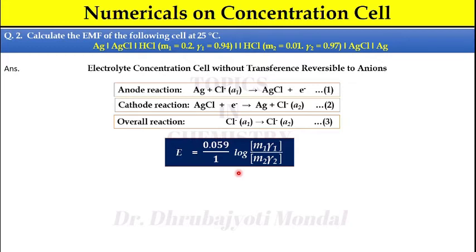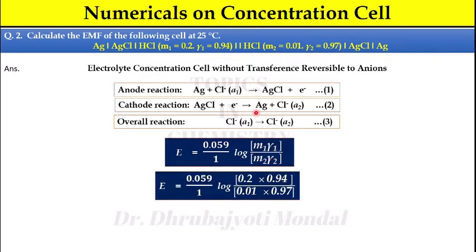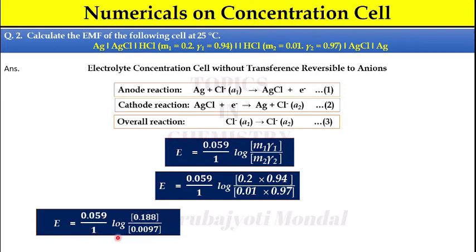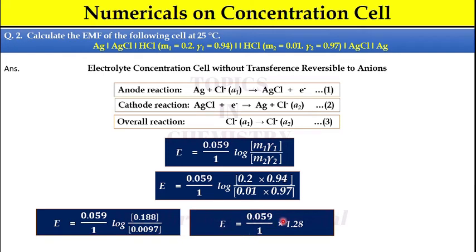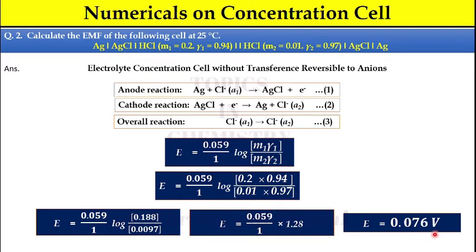Using the formula for reversible-to-anion cells: E = (0.059/1) log(M₁γ₁ / M₂γ₂). Substituting: M₁γ₁ = 0.2 × 0.94 = 0.188 and M₂γ₂ = 0.01 × 0.97 = 0.0097. Therefore E = (0.059/1) × log(0.188 / 0.0097) = 0.059 × 1.287... Calculating gives E = 0.059 × log(19.38) = 0.059 × 1.287 ≈ 0.076 V. The EMF of this cell at 25°C is 0.076 V.